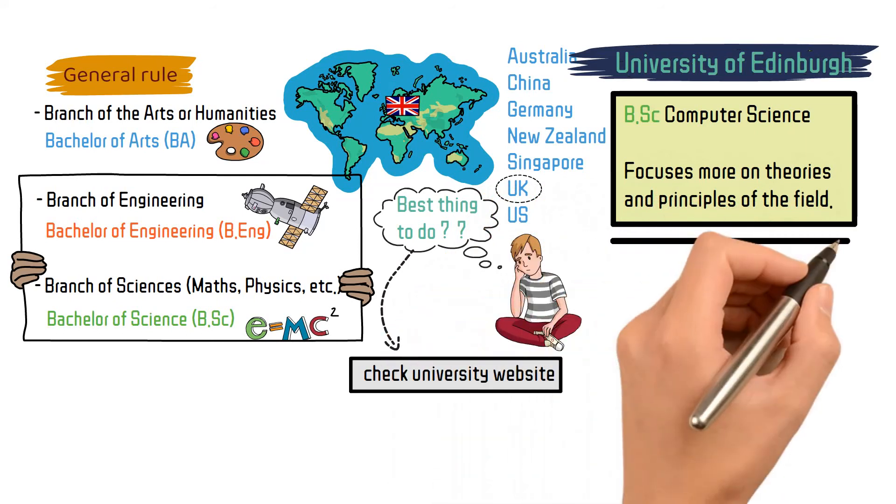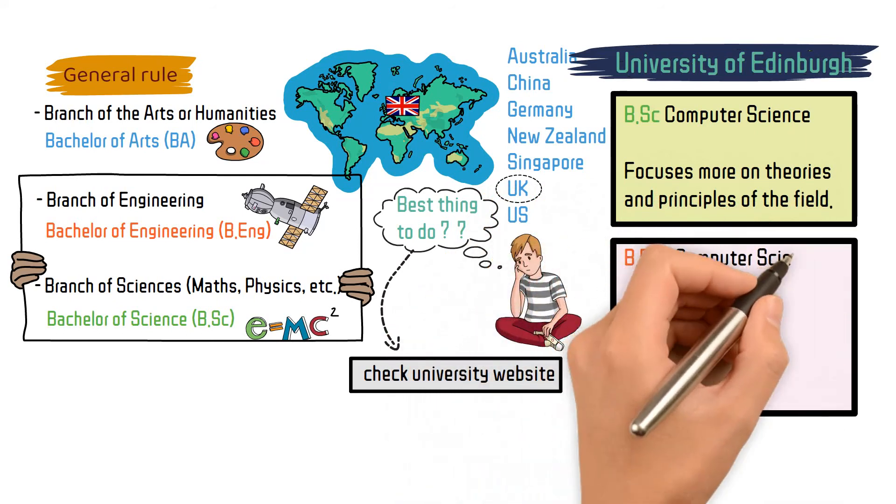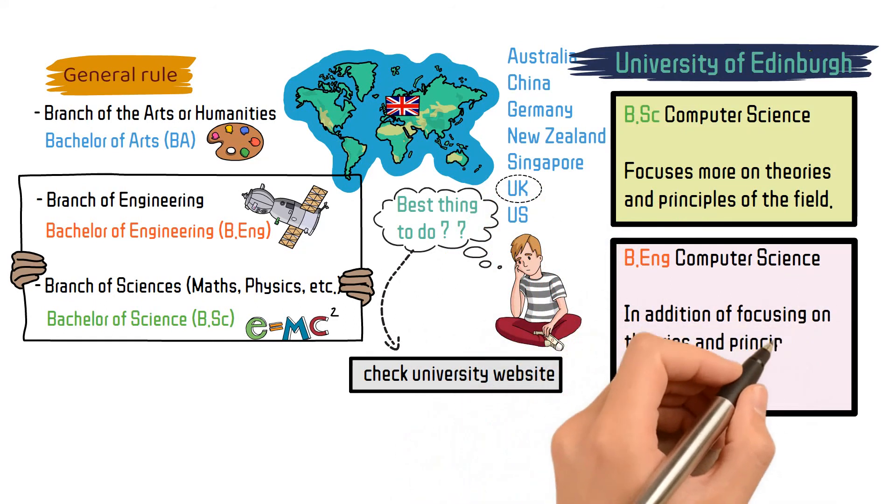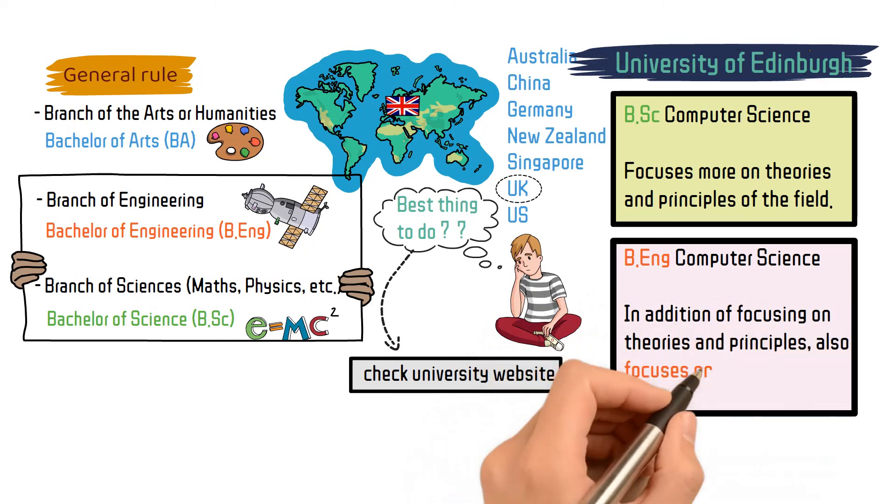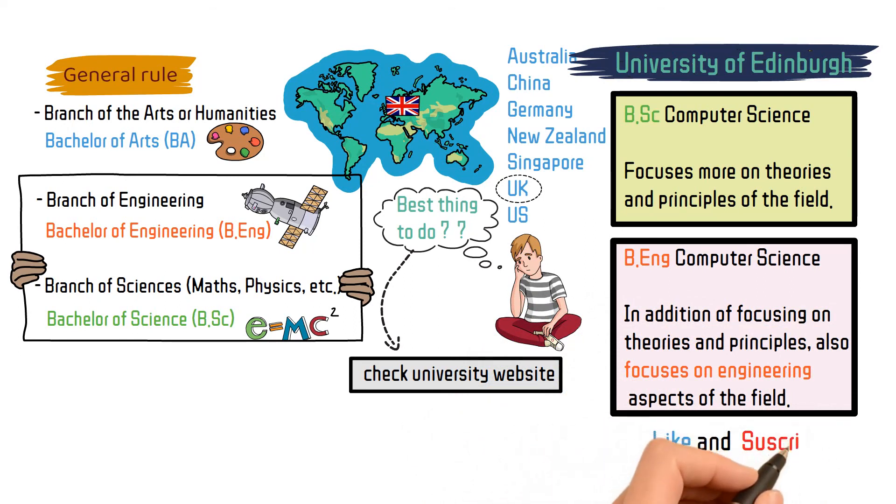On the other hand, the Bachelor of Engineering in Computer Science at the same university, in addition to focusing on the theories and principles of the field, also focuses on the engineering aspect of the field. That's all for today's video. Please like and subscribe, also follow us on Facebook. Thank you.